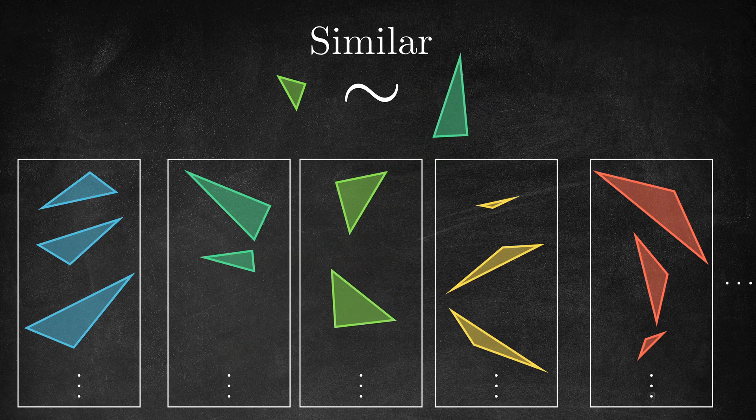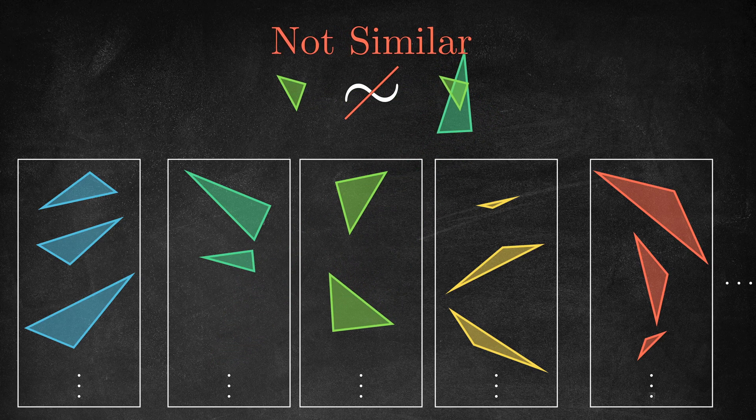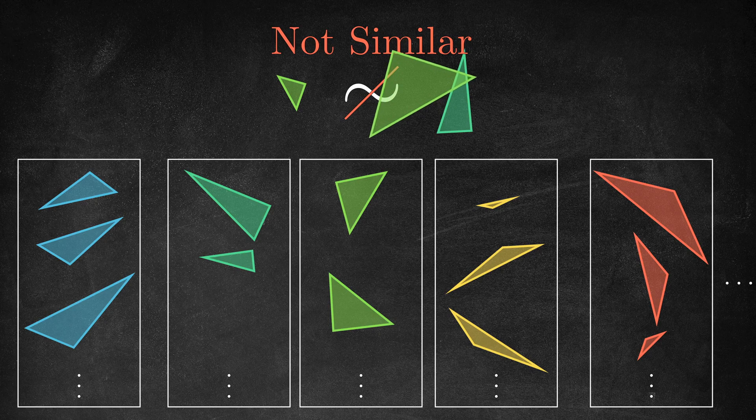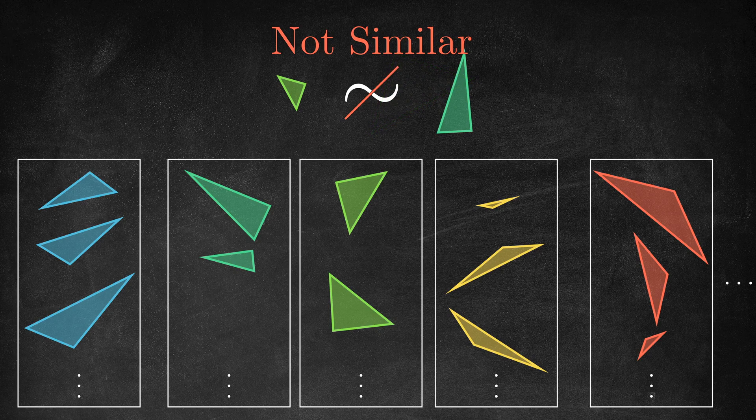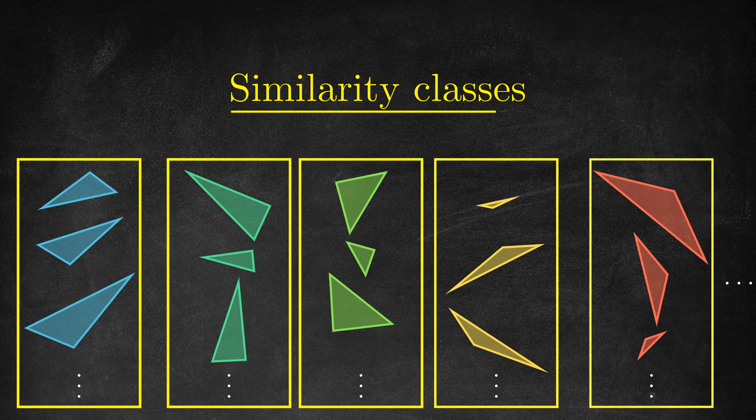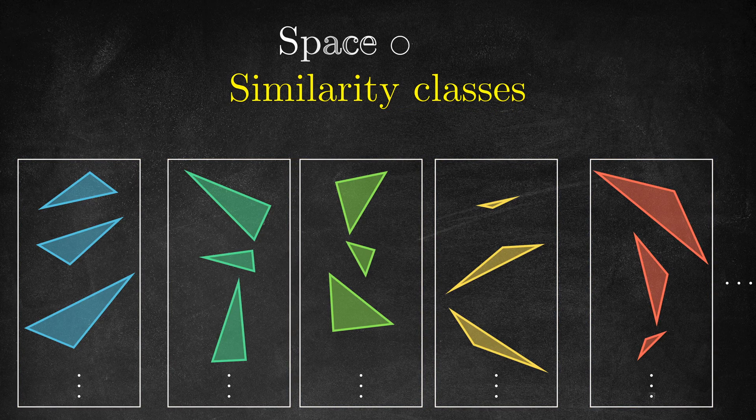When there's no way to do this, which happens when two triangles don't have the same three angles, we think of them as living in distinct similarity classes. To think about all possible similarity classes,